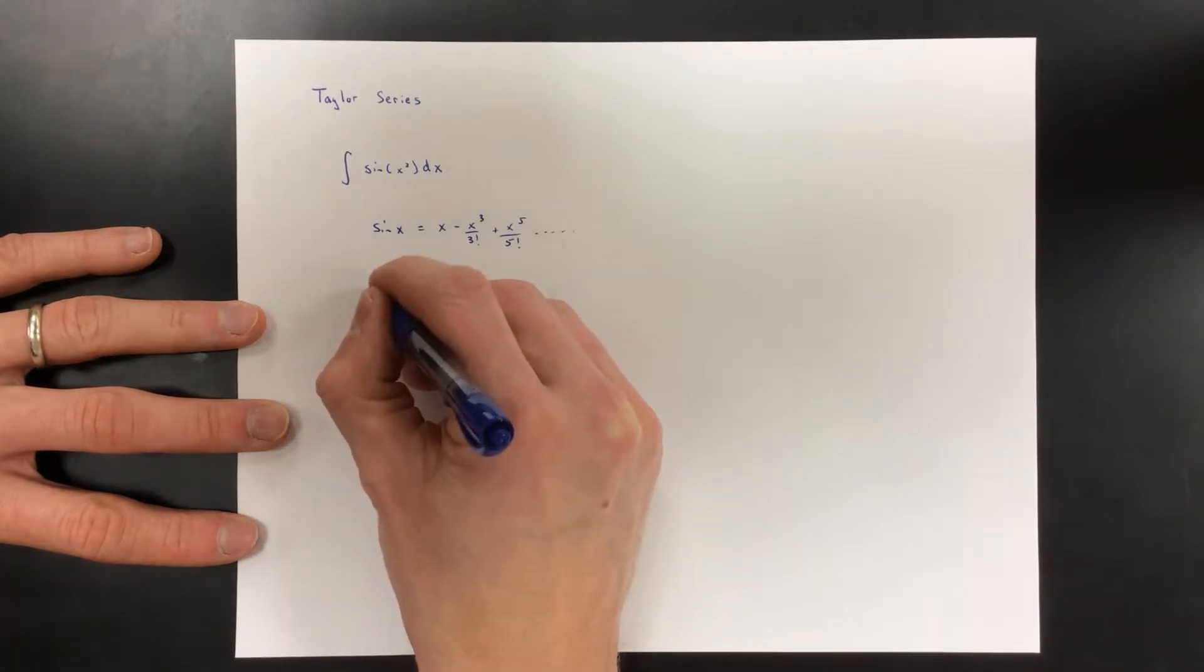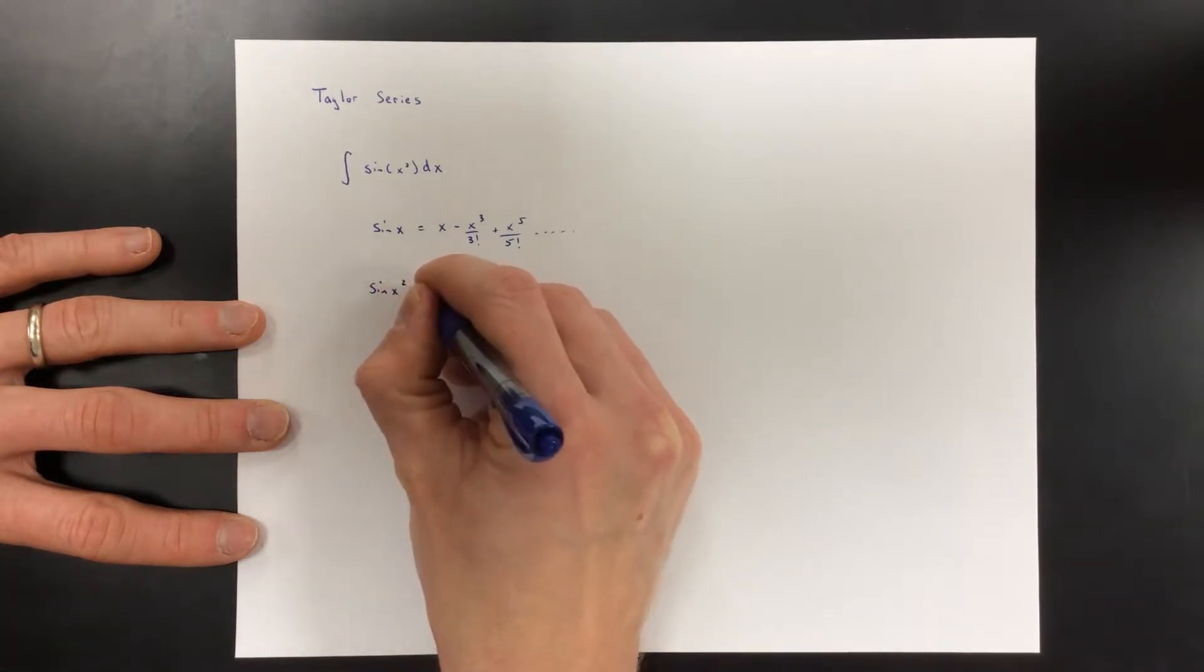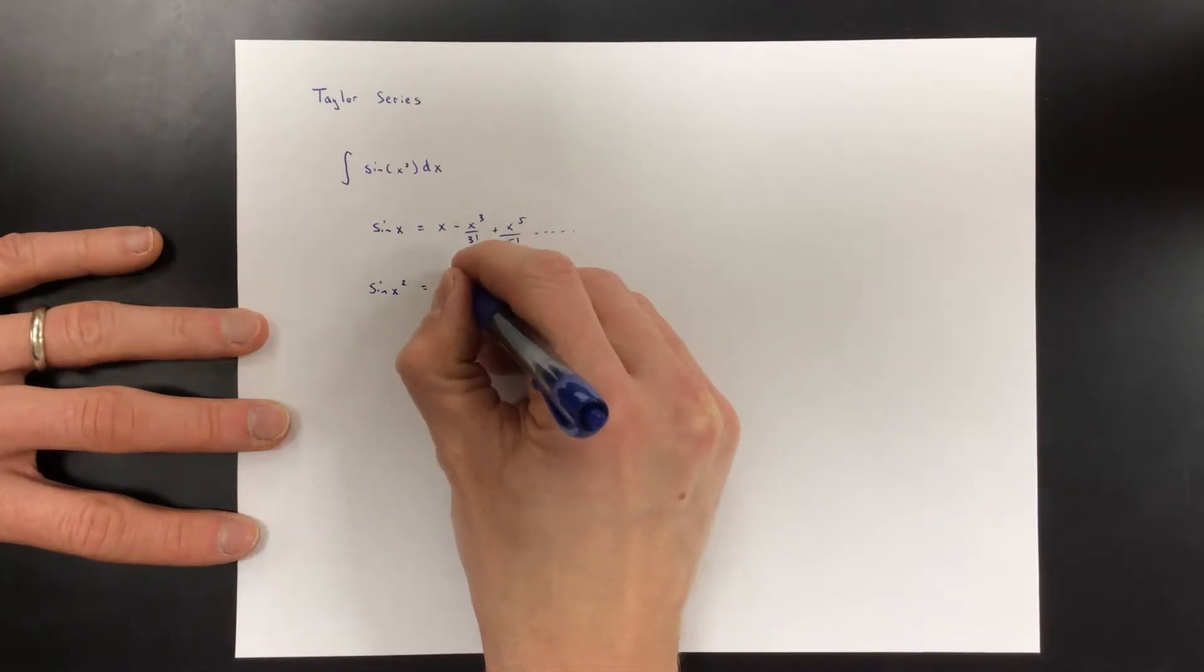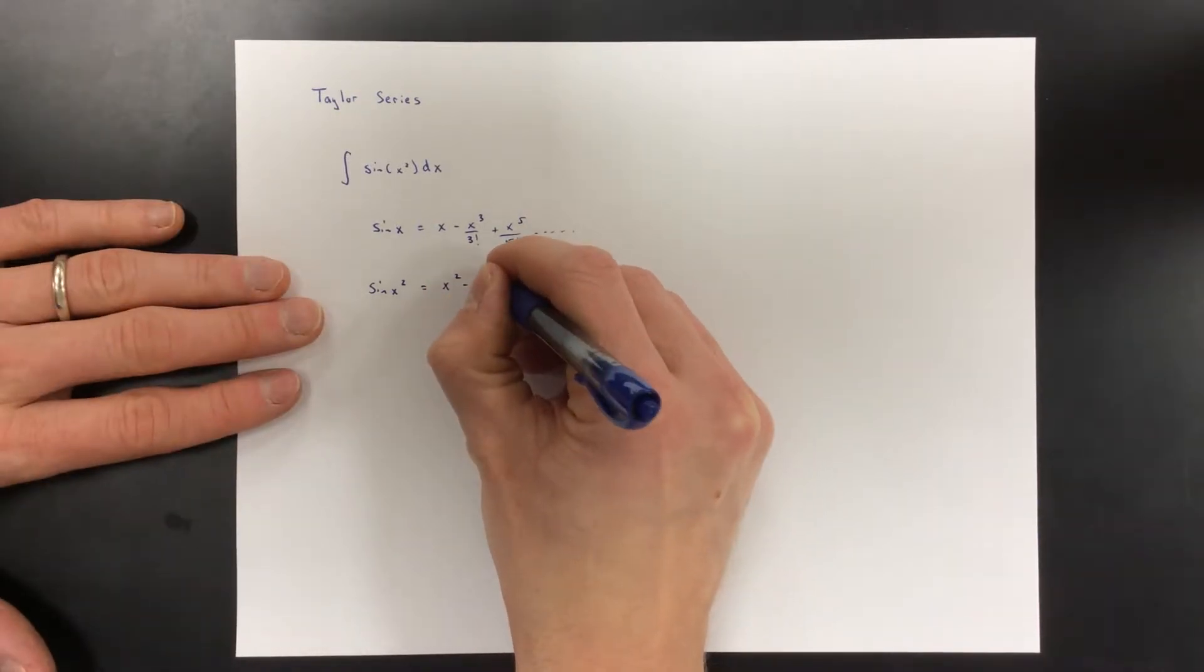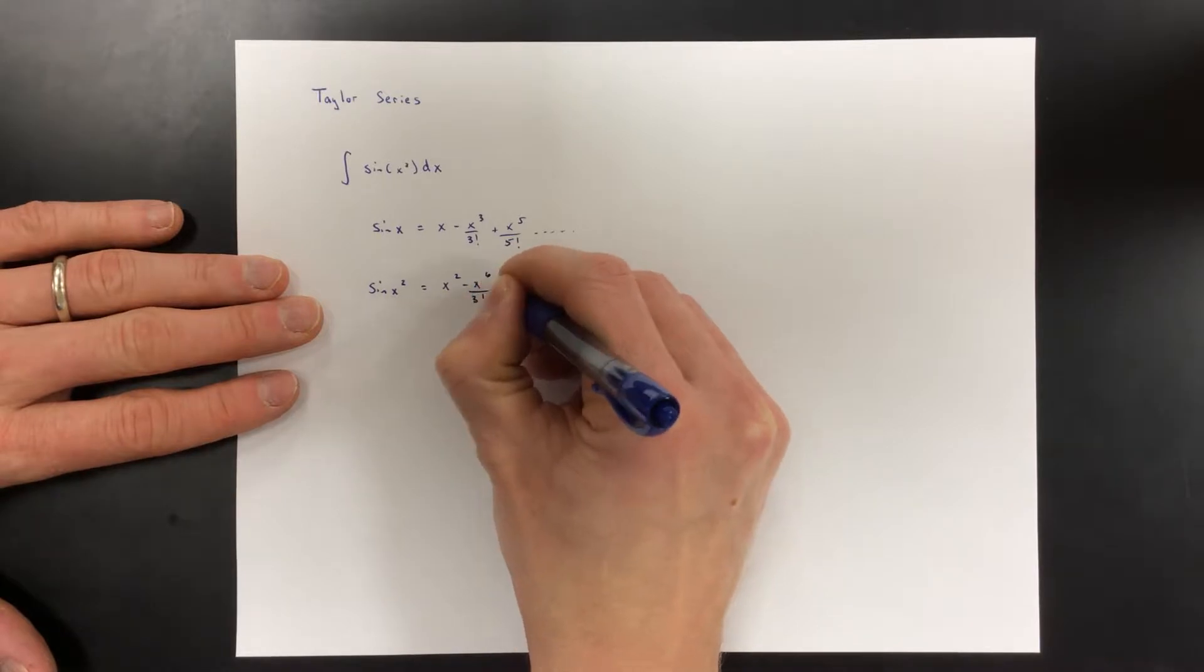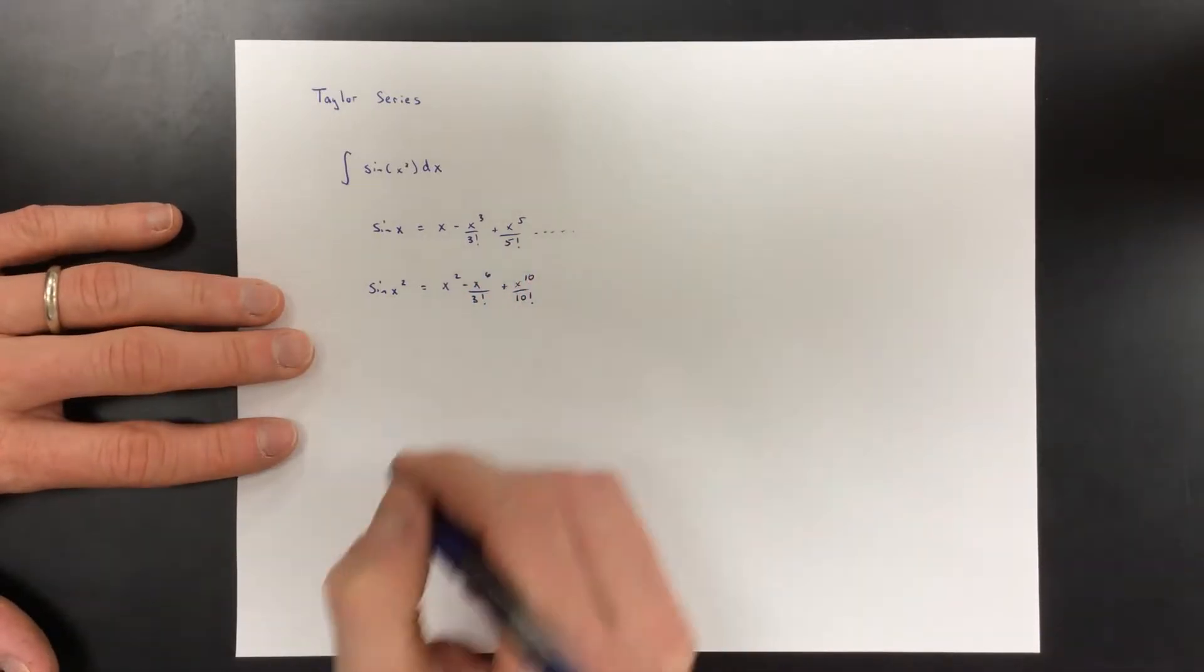Then we can do a substitution and write that sine x squared is x squared minus x to the sixth over 3 factorial plus x to the tenth over 5 factorial.